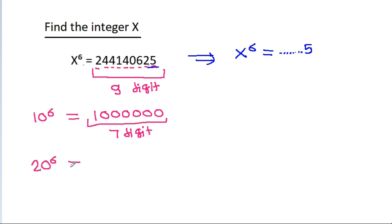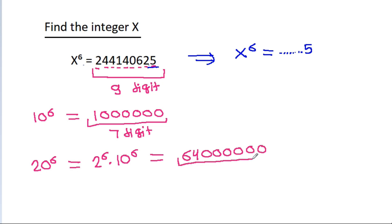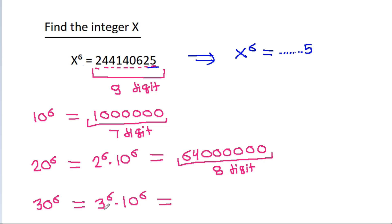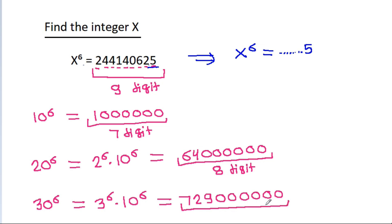20 power 6 is equal to 2 power 6 times 10 power 6, which equals 64 times 10 power 6. So here the total number of digits is 8. And 30 power 6 is equal to 3 power 6 times 10 power 6. Since 3 power 6 is 729, that gives 729 times 10 power 6, and here the total number of digits is 9.